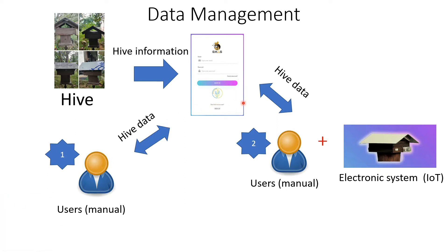How is hive data managed through our system? There are two types of entry modes. The first is the user or manual mode, where the user keys in all the information and current data of a particular hive into the e-MASK system. The user can also check the information and data from time to time.